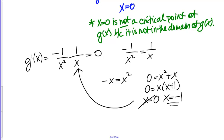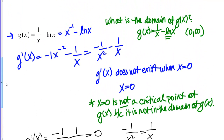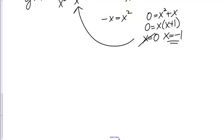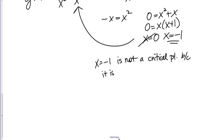x = −1 does satisfy the equation, but once again we need to check if it's in the domain of our original function. Since the domain of g(x) is x > 0, and −1 is not greater than 0, x = −1 is not a critical point because it is not in the domain of g(x).